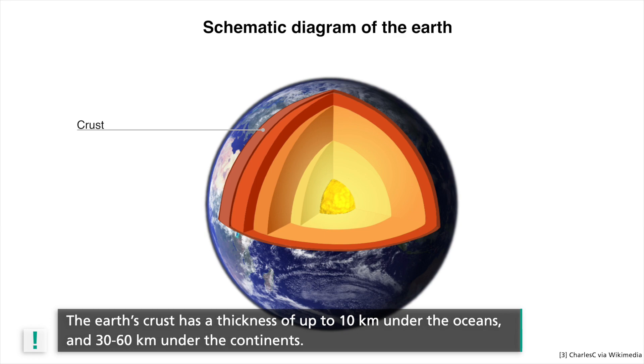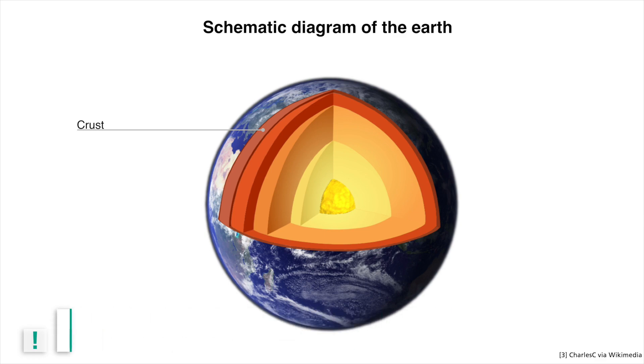Under the earth's mountains, it can reach a thickness of up to 60 kilometers. The earth's crust consists of solid rock and forms the upper portion of the continental plates. Since it is relatively thin, the existing pressures and seismic velocities in the crust are lower than in the deeper layers.